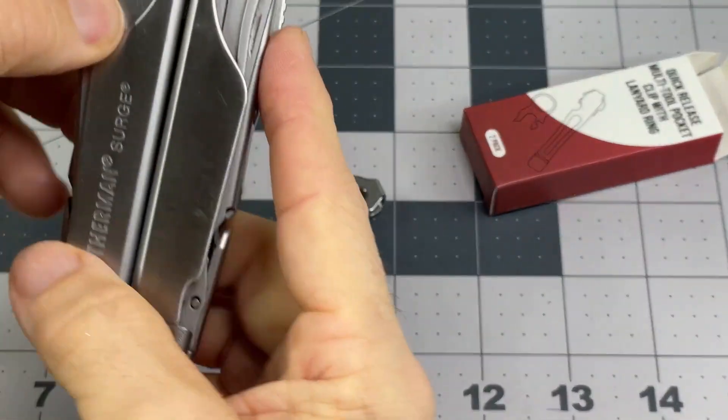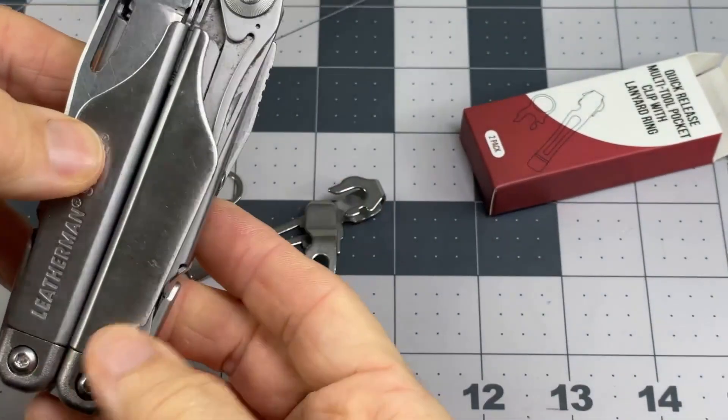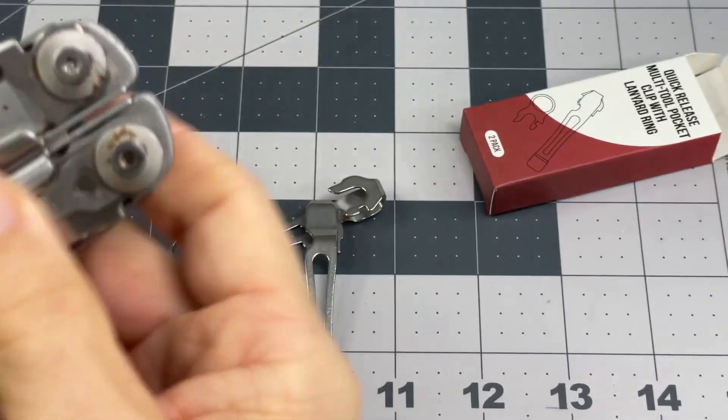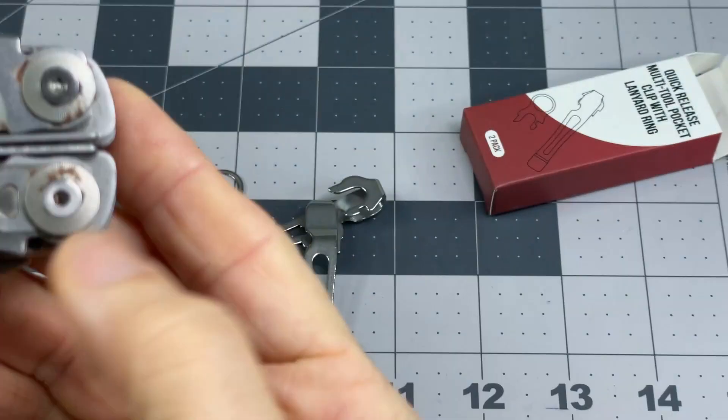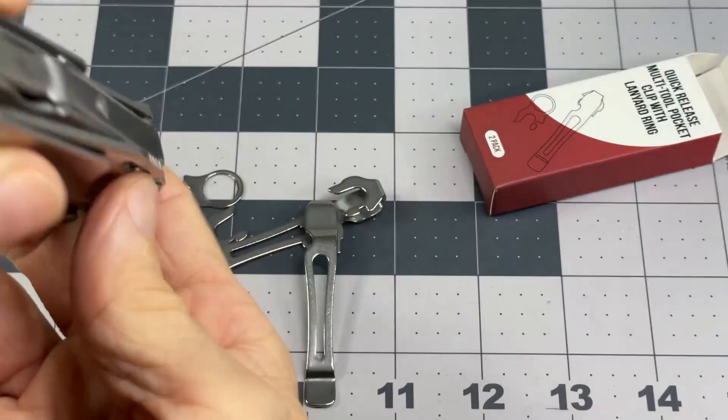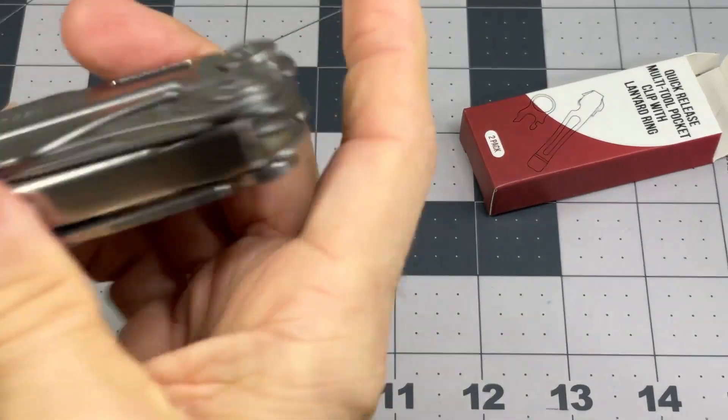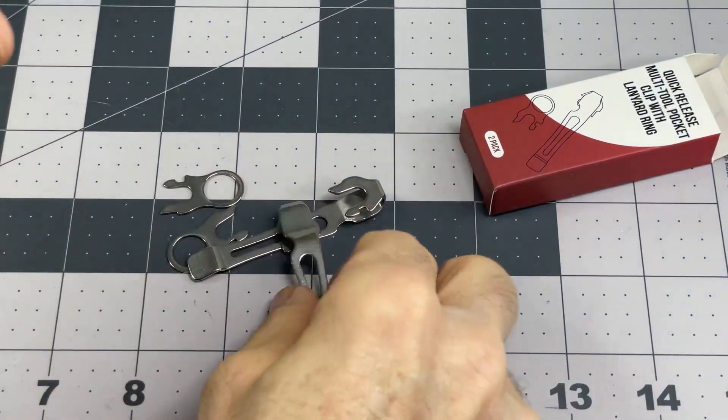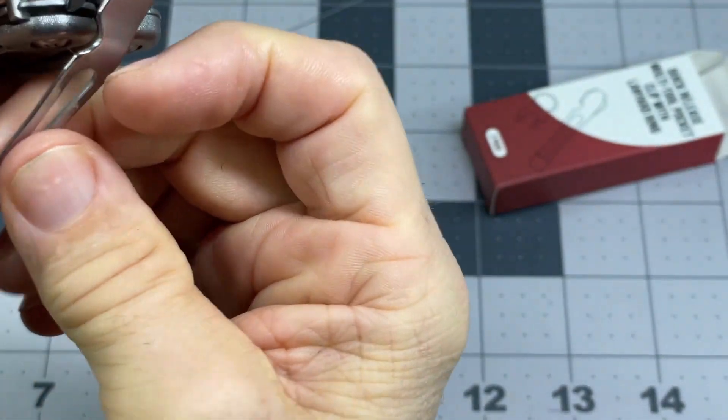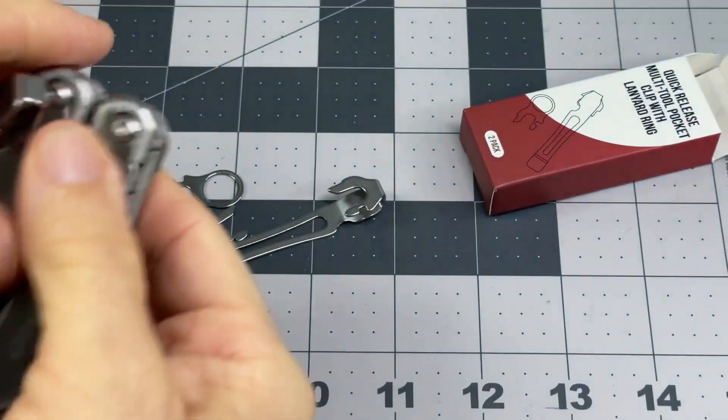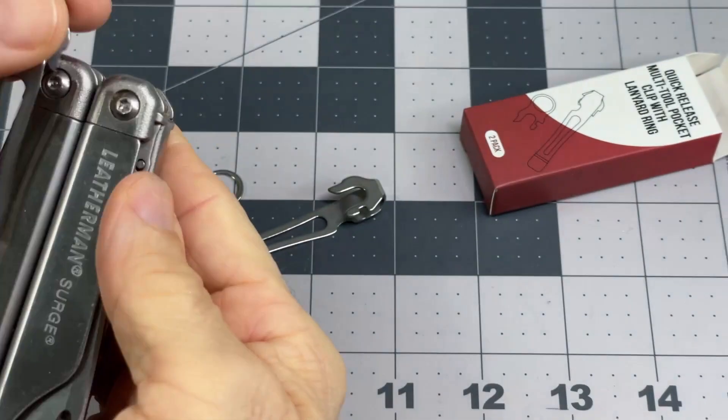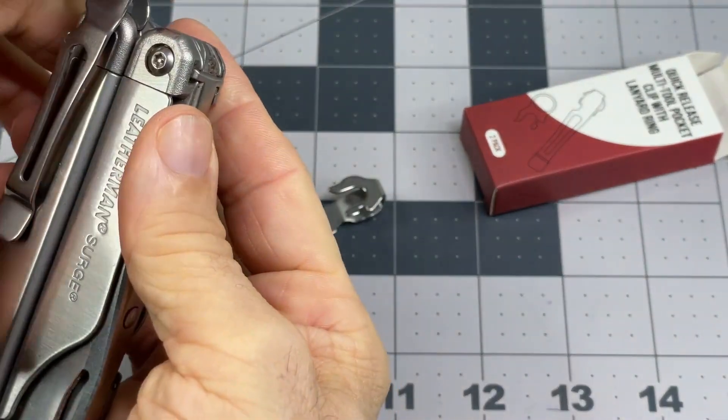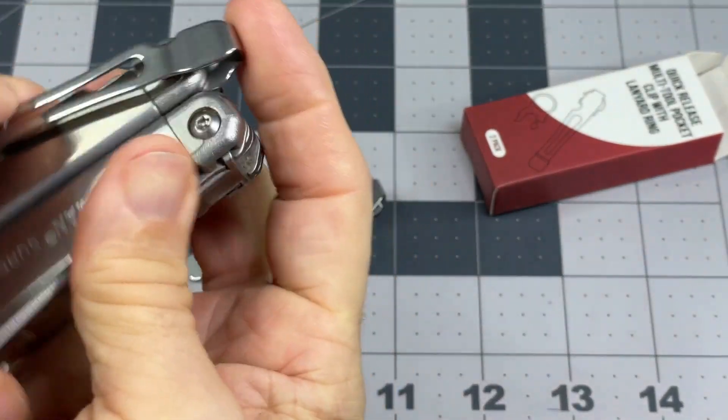I have a Leatherman Surge, fairly well loved and kind of dirty, obviously. What I recall from the instructions is this should slide down in here and click in there, and then allow me to clip that on the pocket.